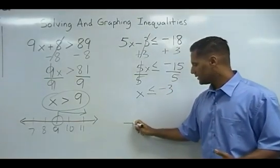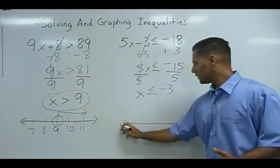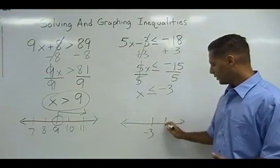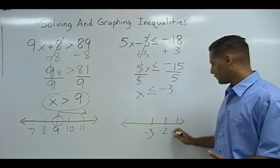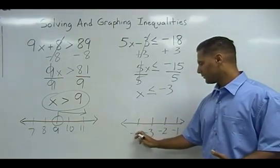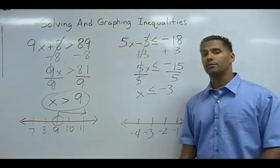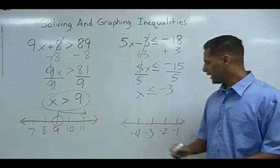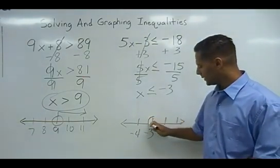So now to graph this inequality, we are going to write negative 3 here. The next number above it is negative 2 and then negative 1. And then going backwards, we have negative 4, and that's good enough for our purposes. You can put a couple more numbers there if you wish, but it's not necessary. Now we're going to put a circle above the number 3.